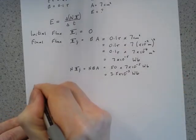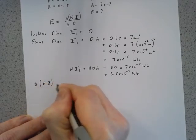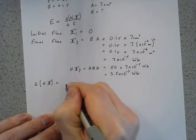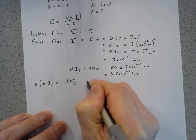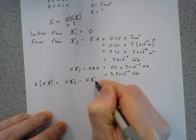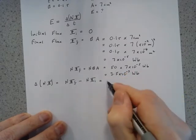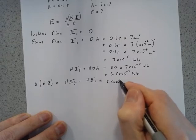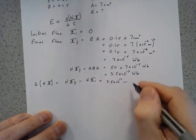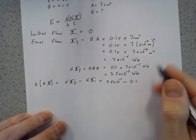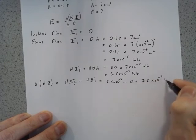Now then we can calculate the change in flux linkage, delta n phi. That will be n phi final minus n phi initial. The final flux linkage was 3.5 times 10 to the minus 3 Webers. The initial flux was zero. Therefore, the initial flux linkage was also zero. So therefore, the change in flux linkage is 3.5 times 10 to the minus 3 Weber.